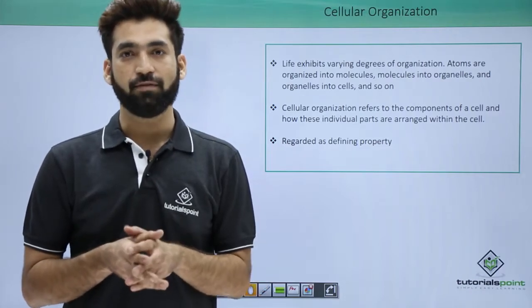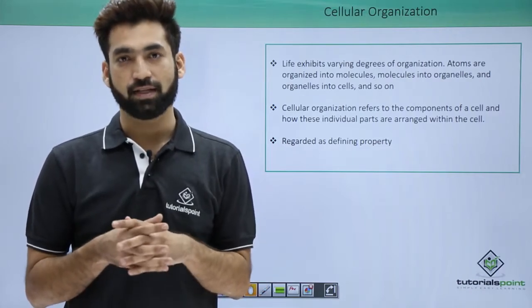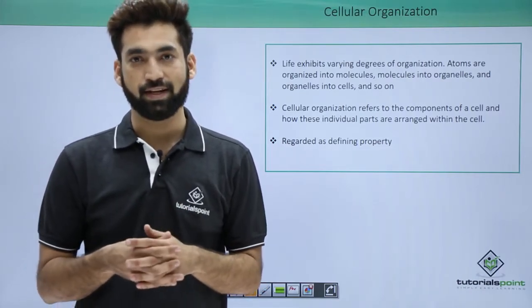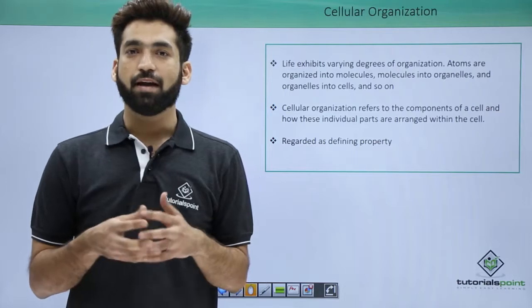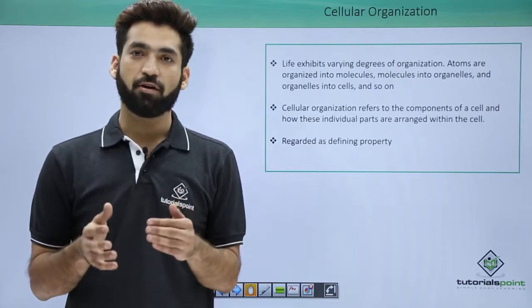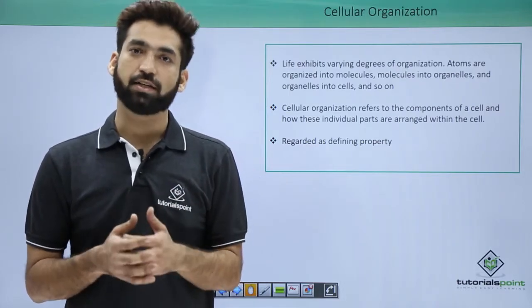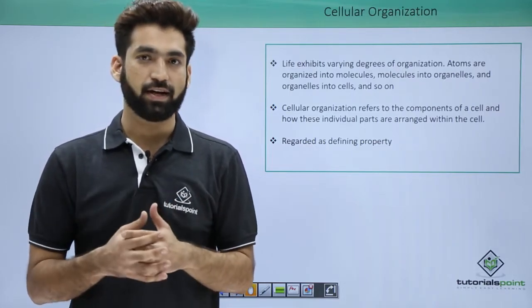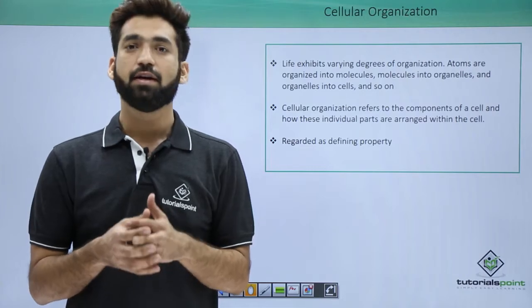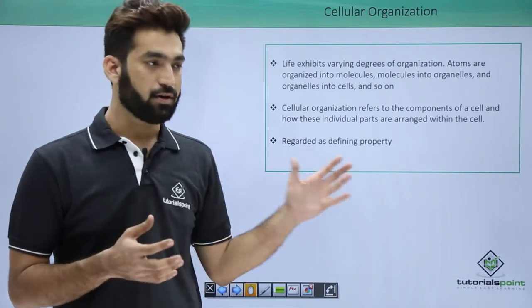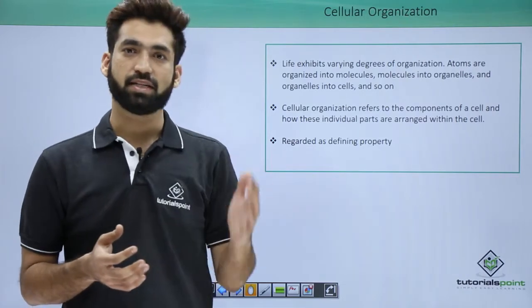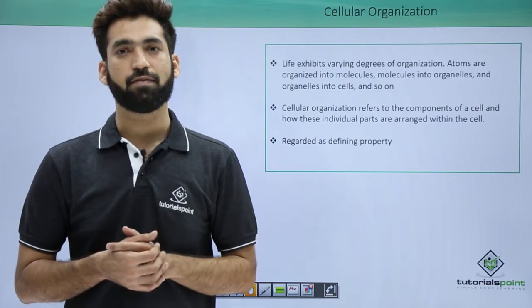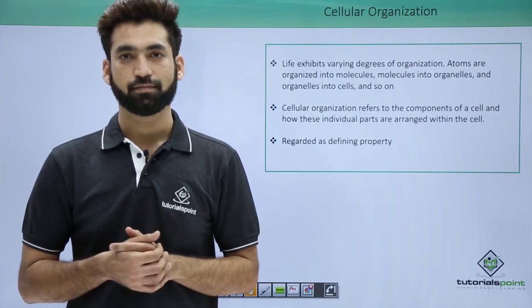In the session on the living world, we discussed the different characters of living systems, in which we talked about five properties. Out of these, growth and reproduction were not the defining properties, while cellular organization, metabolism, and consciousness were the defining properties of living systems.